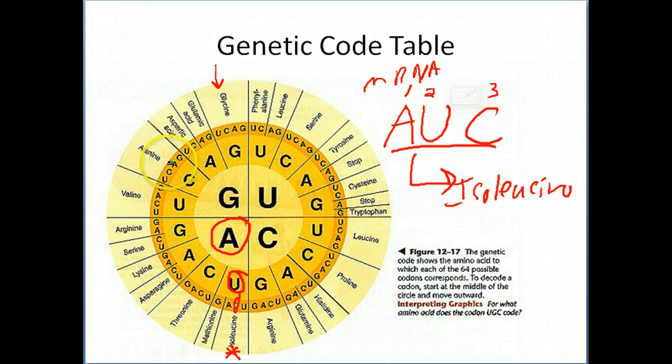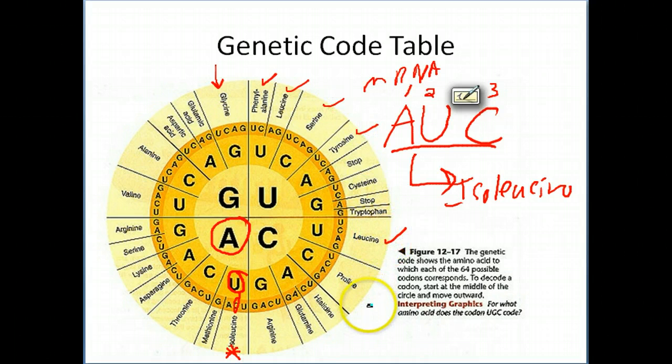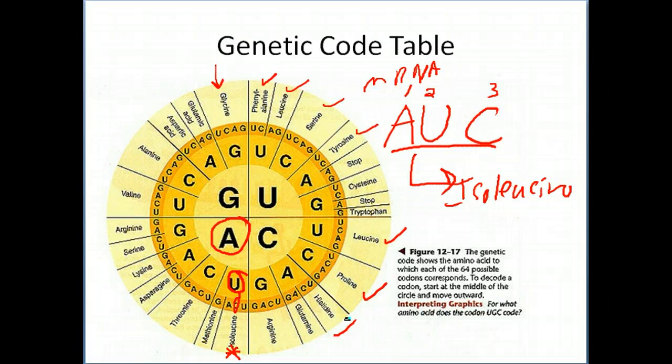There are a number of amino acids on this table. So you can literally go through and see the various amino acids. They're on the outermost layers. So there's phenylalanine, leucine, serine, tyrosine, another spot for leucine. Boy, leucine must be pretty important. Proline, histidine. This is how you use the genetic code table.